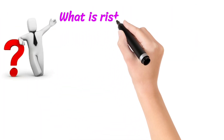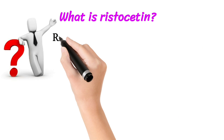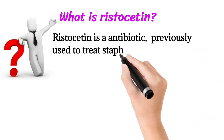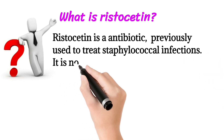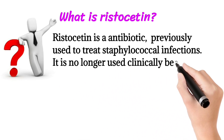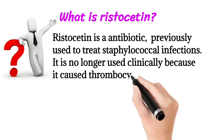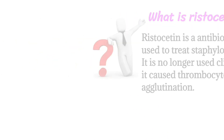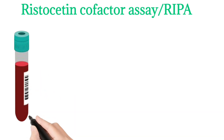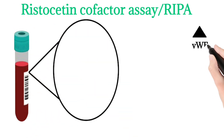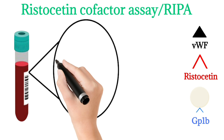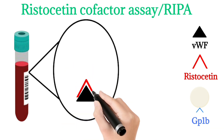Now we will discuss ristocetin. Ristocetin is an antibiotic previously used to treat streptococcal infection. It is no longer used clinically because it causes thrombocytopenia and platelet agglutination. Here is an animation presentation of the ristocetin cofactor assay.